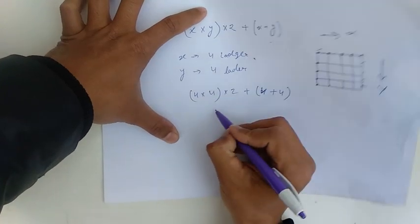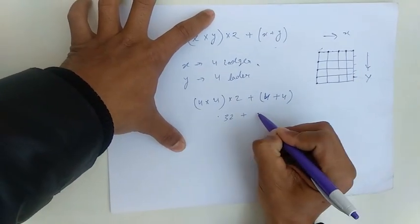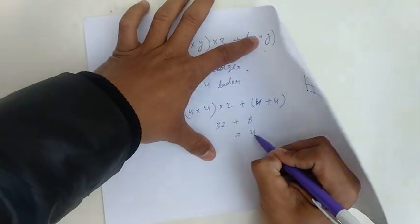4 times 4 is 16, 16 times 2 is 32, plus 4, plus 4 equals 8. The number of ledger will be 40.